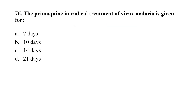Question number 76. Primaquine in radical treatment of vivax malaria is given for: Option A, 7 days; Option B, 10 days; Option C, 14 days; Option D, 21 days. Primaquine is the anti-malarial drug given for malaria treatment for 14 days. The correct option is C.